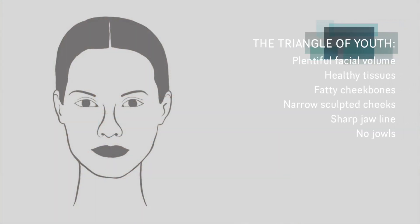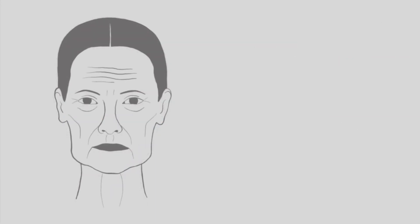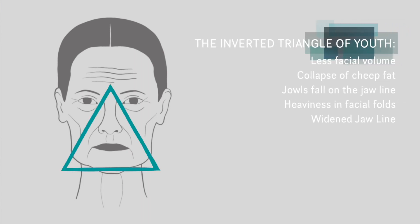Another important point is the triangle of youth. When we're young, we have a lot of volume and healthy tissues — lots of fat up in the cheekbone areas, narrow and sculpted cheeks, a sculpted jawline without jowls, all tapering down to a refined chin point. As we age, we get the inverted triangle of youth: the cheek fat pads collapse down into the midface, jowls fall down on the jawline, and we get heaviness within the central folds — creating heaviness pointing upward rather than down, with a widened jawline. Corrective treatments aim to reverse that process.